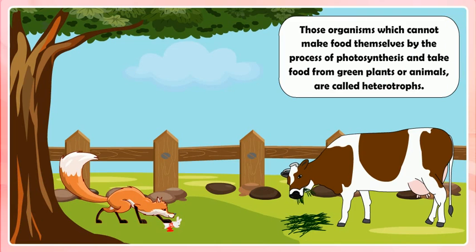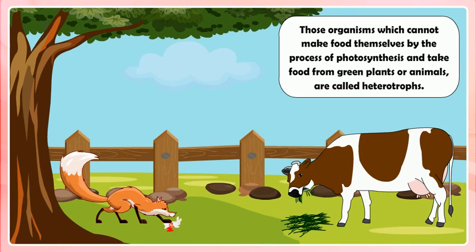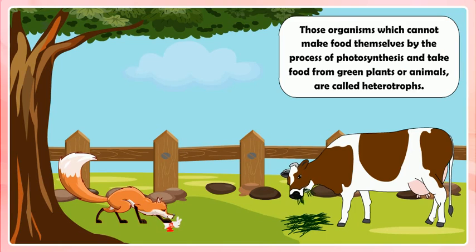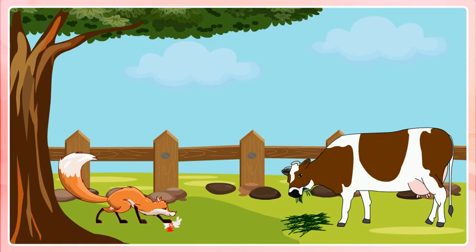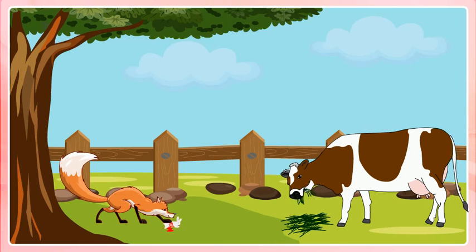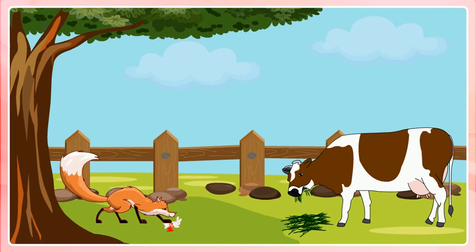Heterotrophs are those organisms which cannot make food themselves by the process of photosynthesis and take food from green plants or animals. They are called heterotrophs and their mode of nutrition is called heterotrophic. All the non-green plants and animals including human beings are heterotrophs.